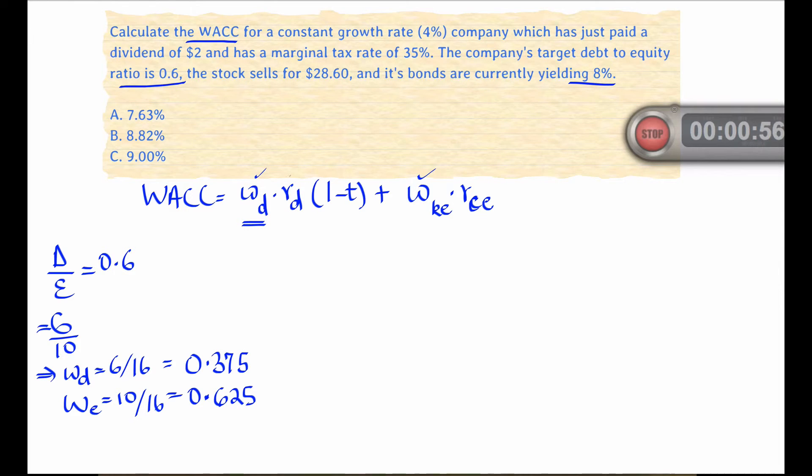So we're given the weights, we're given the cost of debt, we're given the tax rate.